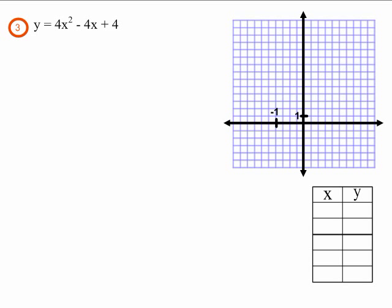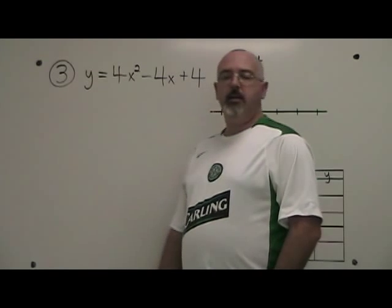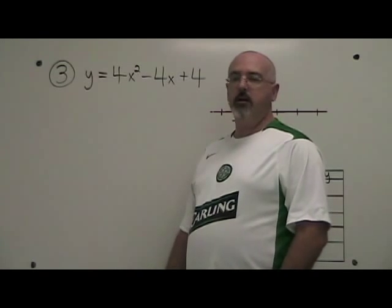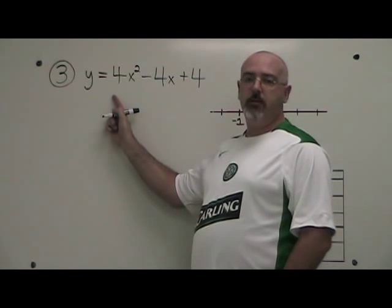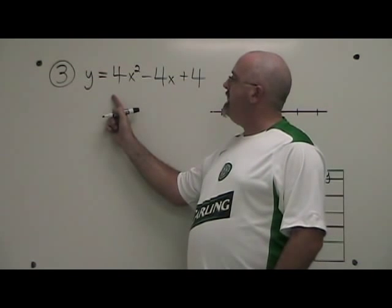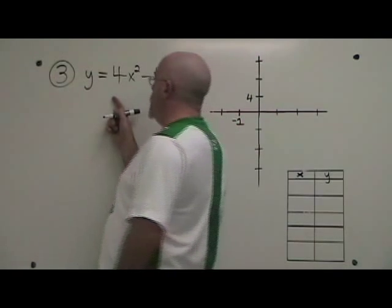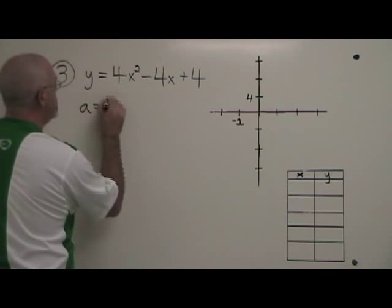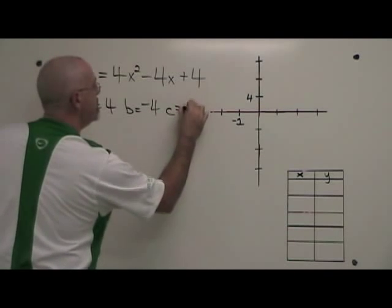Here is my equation for example 3: y equals 4x squared minus 4x plus 4. Let's start graphing it. The a, b, and c are the numerical coefficients of our first, second, and third terms. So a equals 4, b equals negative 4, c equals 4.